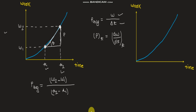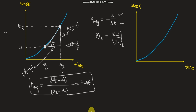If the line joining these two points makes an angle theta with the horizontal, then tan(theta) will be equal to the perpendicular over the base — that is, (w2 minus w1) divided by (t2 minus t1). Hence, average power equals tan(theta). This is the graphical meaning of average power.